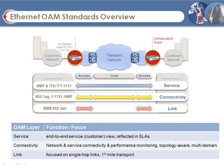As Ethernet has evolved as a carrier-grade service, so have the OAM standards that support resilient, easily managed deployments. The 802.3AH link layer OAM standard was the first to emerge, helping operators manage the last mile, typically linking MSPPs to the customer premises over copper or fiber links.